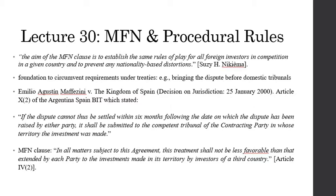Emilio Augustin Maffesini versus the Kingdom of Spain, decision on jurisdiction dated 25 January 2000, is an example. Maffesini invoked arbitration before ICSID under the Spain-Argentina BIT of 1991. Spain raised jurisdictional objections, including the one contained in Article 10(2) of the treaty, which stated that if the dispute cannot be settled within six months, it shall be submitted to the competent tribunal of the contracting party in whose territory the investment was made — Spain in this case.